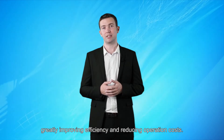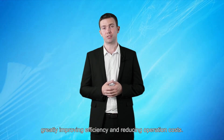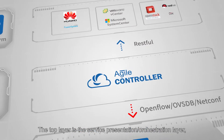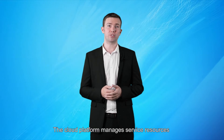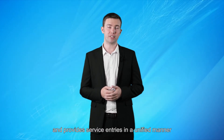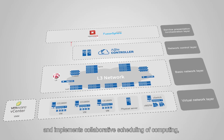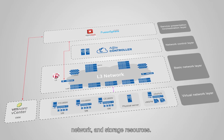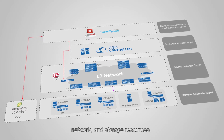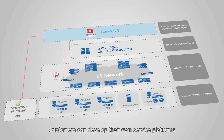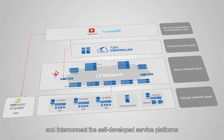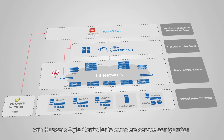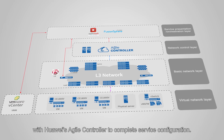Implementing fast service delivery and refined O&M, greatly improving efficiency and reducing operation costs. The top layer is the service presentation orchestration layer, at which a cloud platform is deployed. The cloud platform manages service resources and provides service entries in a unified manner, and implements collaborative scheduling of computing, network, and storage resources. Customers can develop their own service platforms based on the open source cloud platform and interconnect the self-developed service platforms with Huawei's Agile Controller to complete service configuration.